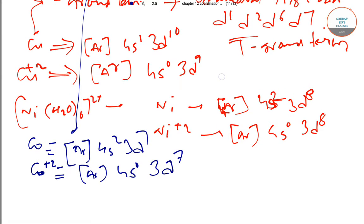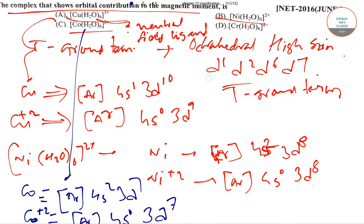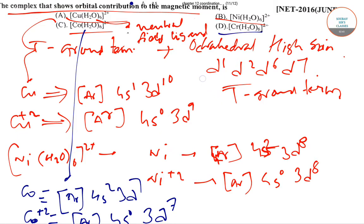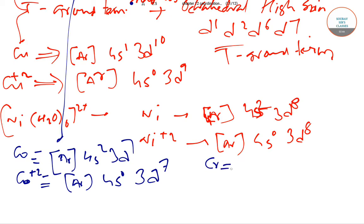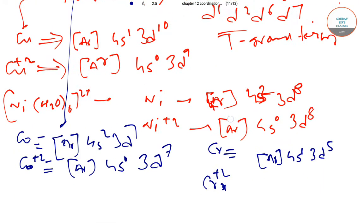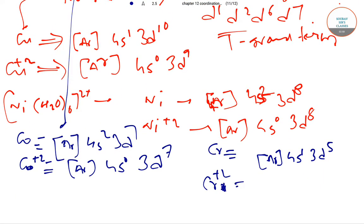And coming to the fourth option we have D. So Cr has an electronic configuration of [Ar] 4s1 3d5. So Cr+2 will have an electronic configuration of [Ar] 4s0 3d4.